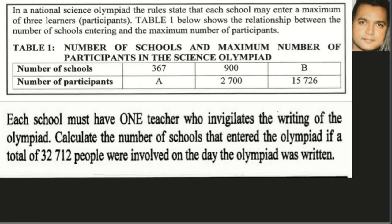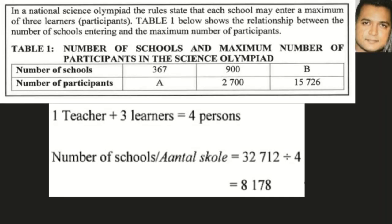Each school must have one teacher who invigilates the writing of the Olympiad. Calculate the number of schools that entered the Olympiad if a total of 32 712 people were involved on the day. We know there were three learners per school and every school comes with one teacher, so that's four people from each school.